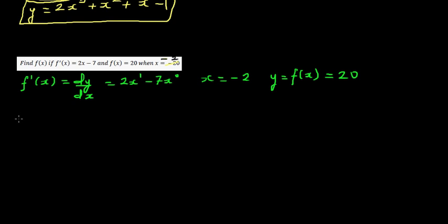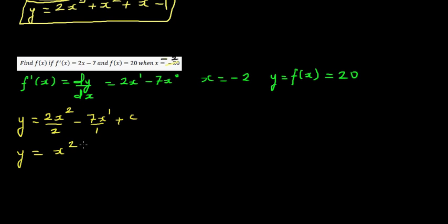Using the same process, y is found by integrating: 2x² divided by 2, minus 7x to the power of 1 divided by 1, plus c. So y = x² - 7x + c. Stop and check: differentiating x² - 7x + c gives 2x - 7, confirming the integration is correct.